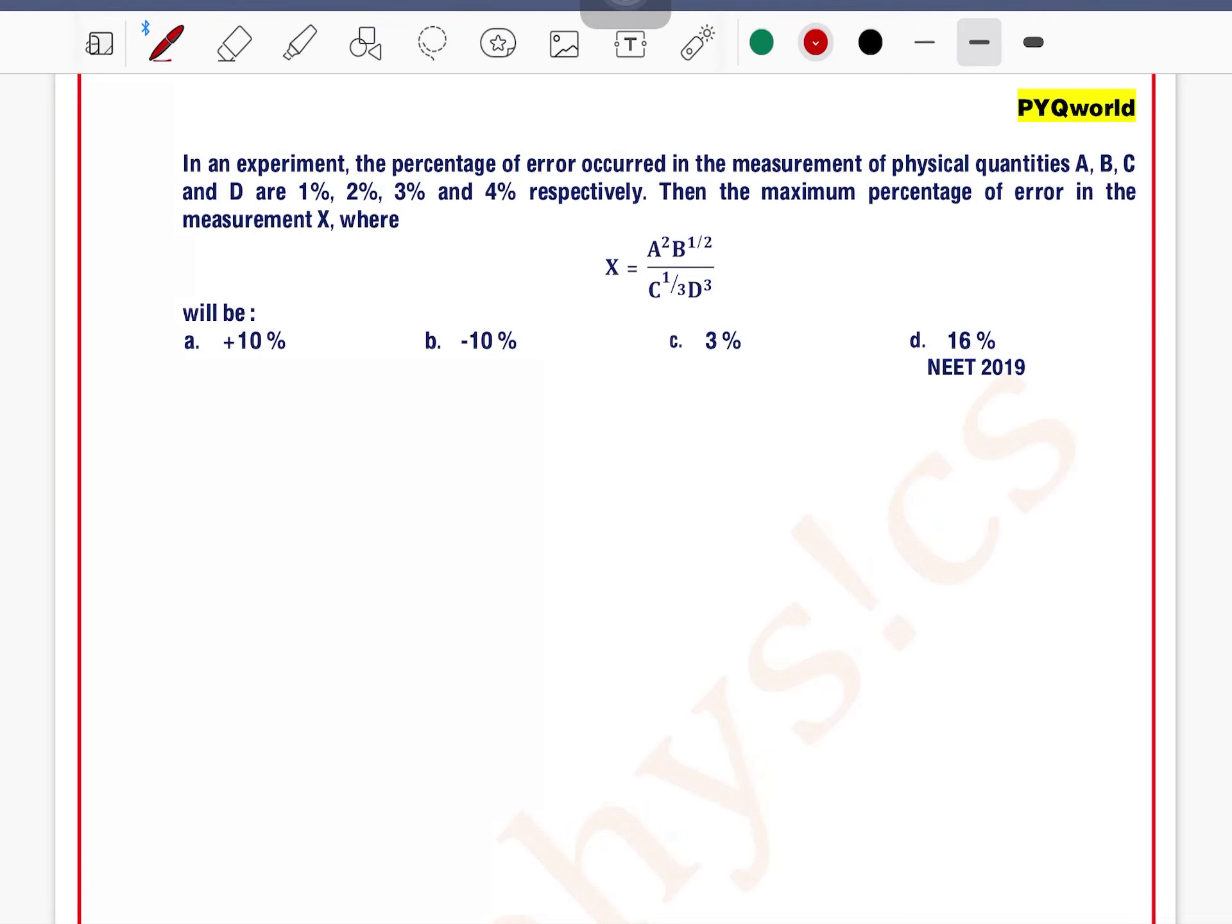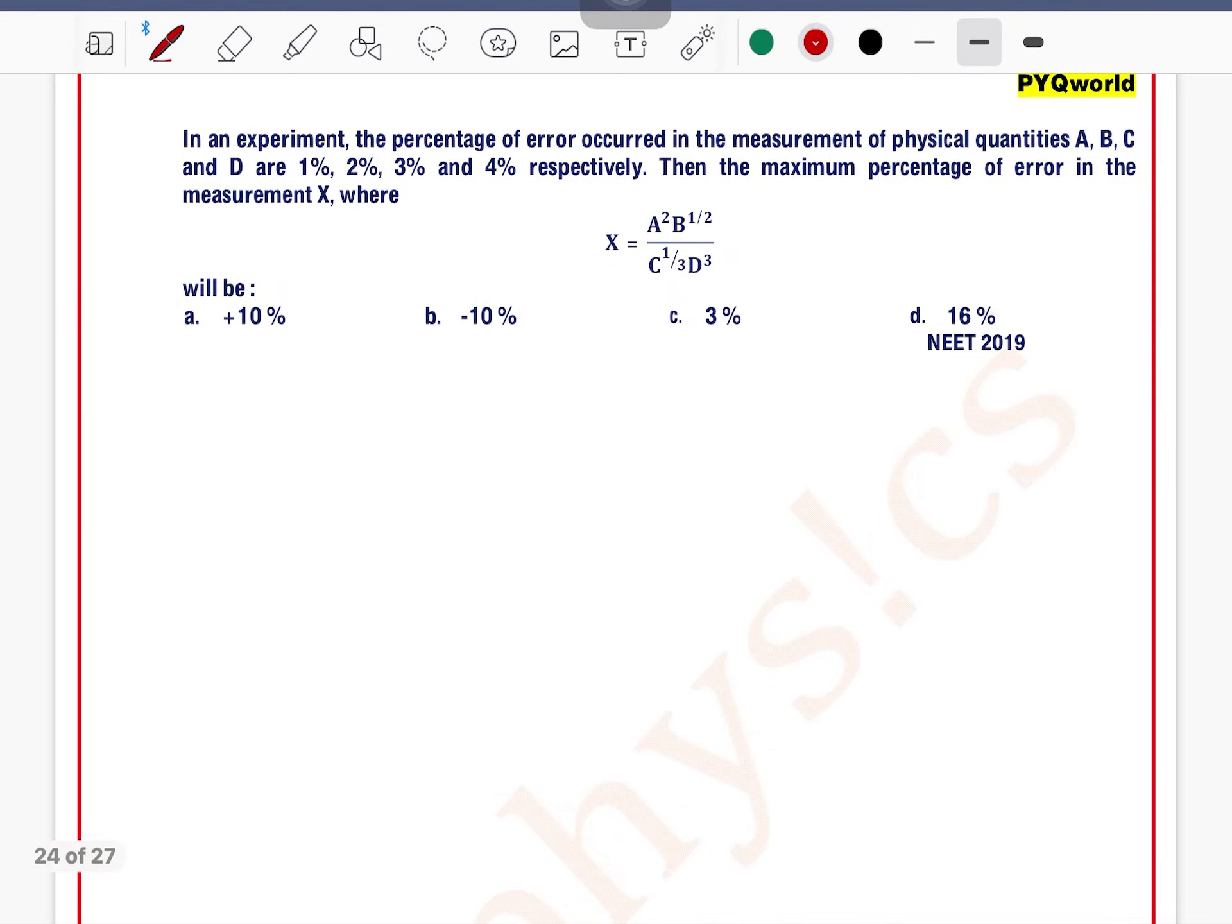In an experiment, the percentage of error occurred in the measurement of physical quantities A, B, C, D are 1, 2, 3, 4 respectively.